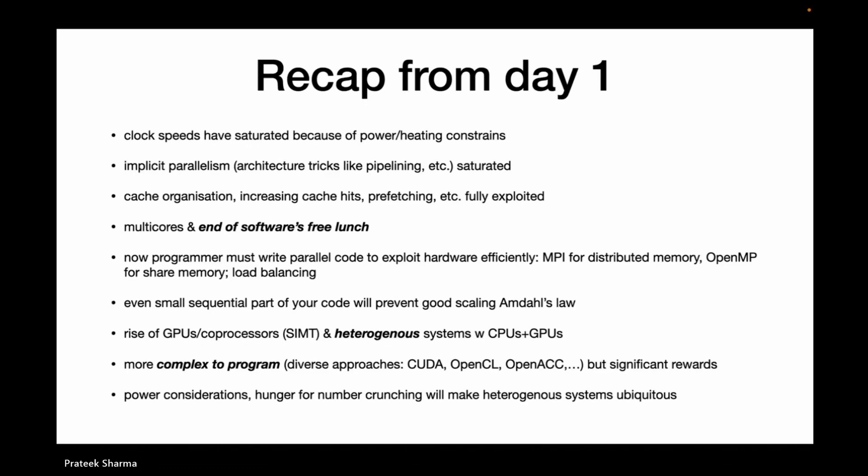The multi-core era started around 2008–2010. The next thing, which has already happened, is the rise of GPUs — single instruction, multi-threading, massive concurrence. You can do a lot of similar things together on a large scale. GPUs don't exist alone; they always come with CPUs. This is what heterogeneous architecture means. There is more demand from the software developer to be able to use all of this.